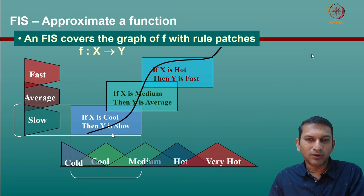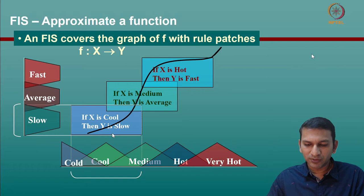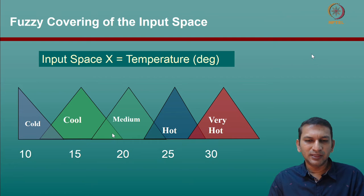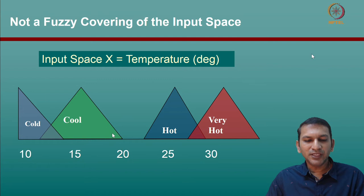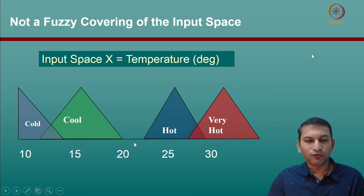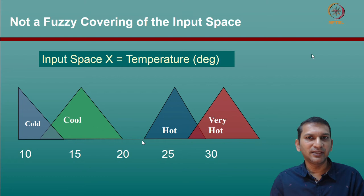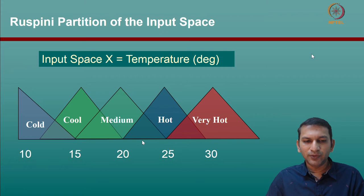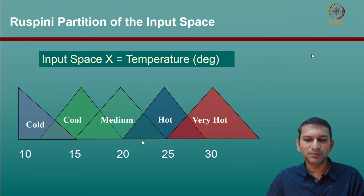Going back to the example from the previous lecture, we considered five fuzzy sets that clearly form a fuzzy covering of the input space. If one piece were missing, it would not be a fuzzy covering — for an element falling between say 20 and 22, no rule would be excited and the fuzzy inference system would be unable to produce an output. You will immediately recognize that this collection not only forms a cover but also forms a Ruspini partition of the input space.